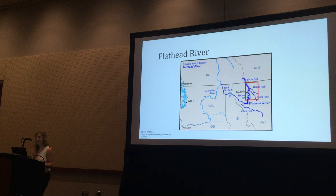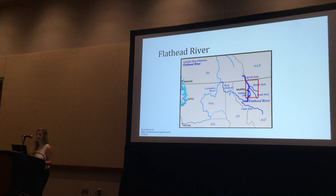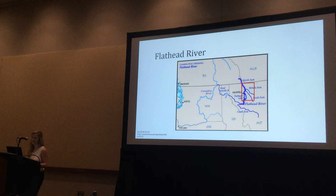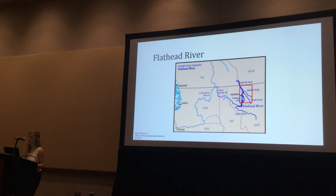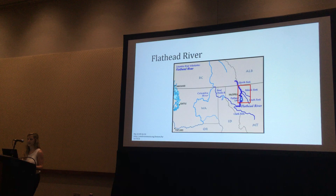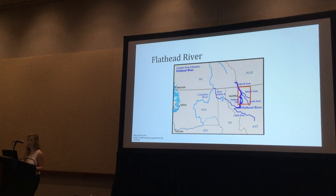Getting right into my study site, this is the Flathead River in northwest Montana, right near Glacier National Park — it's very beautiful there. The river is made up of three different forks: the North, the Middle, and the South Fork. The North Fork originates in Canada and travels south until it joins with both the Middle and the South Fork before the city of Kalispell. It then empties into Flathead Lake and eventually joins with the Clark Fork River.